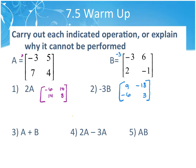Problem 3 says A plus B. I literally just add first and first: negative 3 and negative 3 is negative 6. Then I add second and second, that's 11. Then second row, first column: 7 and 2, which is 9. And then 4 and negative 1, which would be 3.